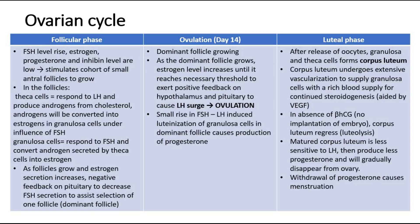The third phase in the ovarian cycle is the luteal phase. After the release of the oocyte, the granulosa and theca cells in the ovary will form the corpus luteum, which undergoes extensive vascularization to supply the granulosa cells with a rich blood supply for continued steroidogenesis. If no beta-HCG is present, the corpus luteum will regress when there is no fertilization and no pregnancy. The matured corpus luteum becomes less sensitive to LH, produces less progesterone, and gradually disappears from the ovary. Withdrawal of progesterone then causes menstruation to occur.